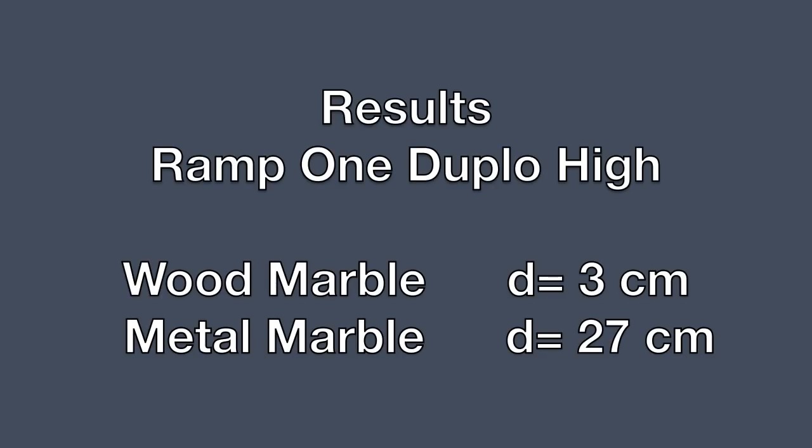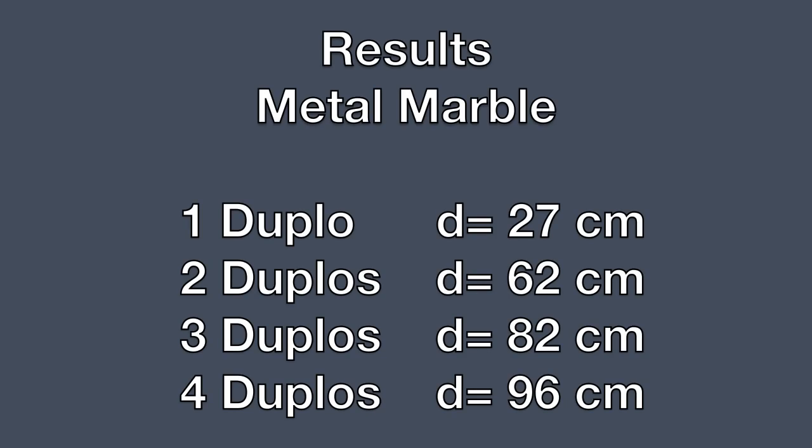The results: when the ramp was one Duplo high, the wood marble moved the car a distance of three centimeters. The metal marble moved the car a distance of 27 centimeters. Two Duplos high: 62 centimeters. Three Duplos high: 82 centimeters. Four Duplos high: 96 centimeters.